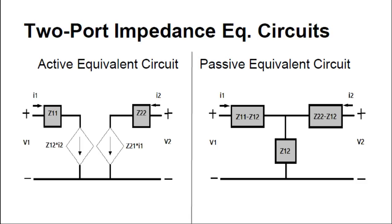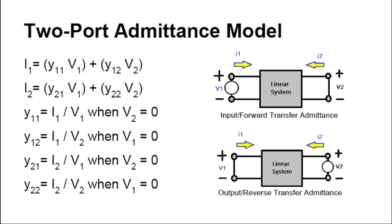Next, we have the two-port admittance model. Admittance is the inverse of impedance. So you'll see here that Y, the symbol for admittance, equals the current over the voltage. We've simply flipped our voltage and our current, and we've got the important equations here for calculating the parameters in the two-port admittance model.